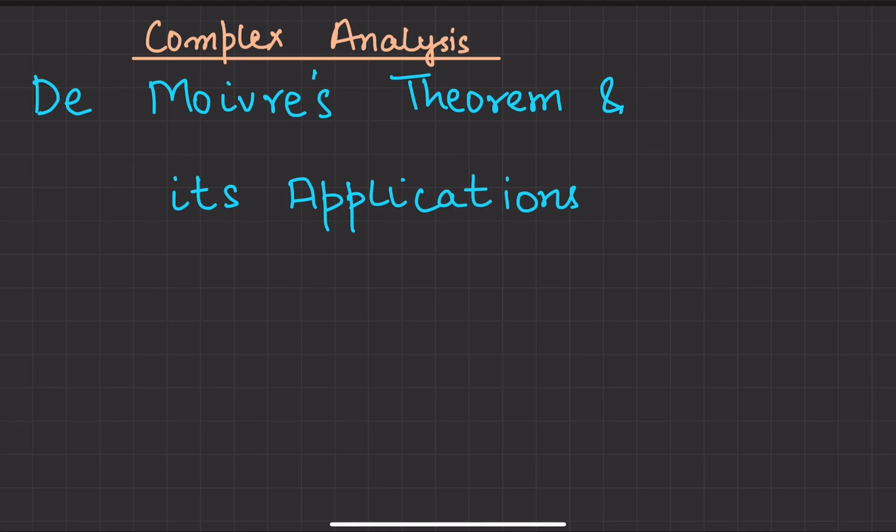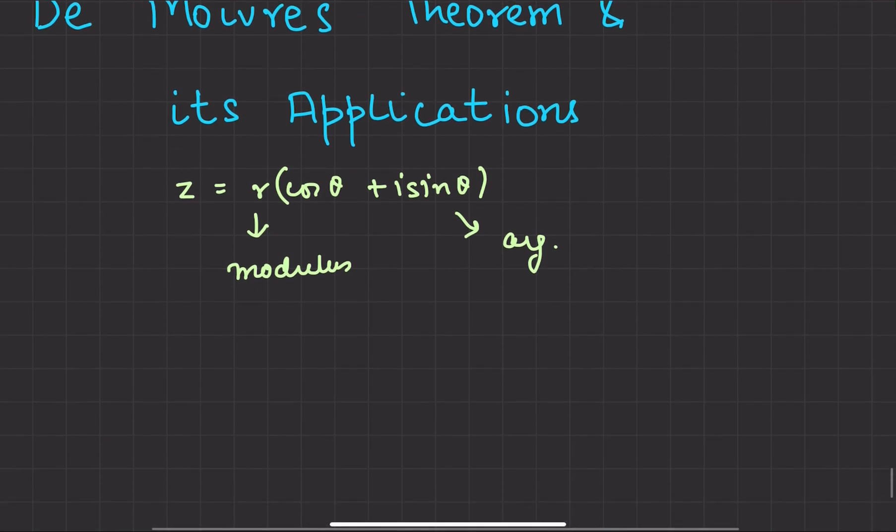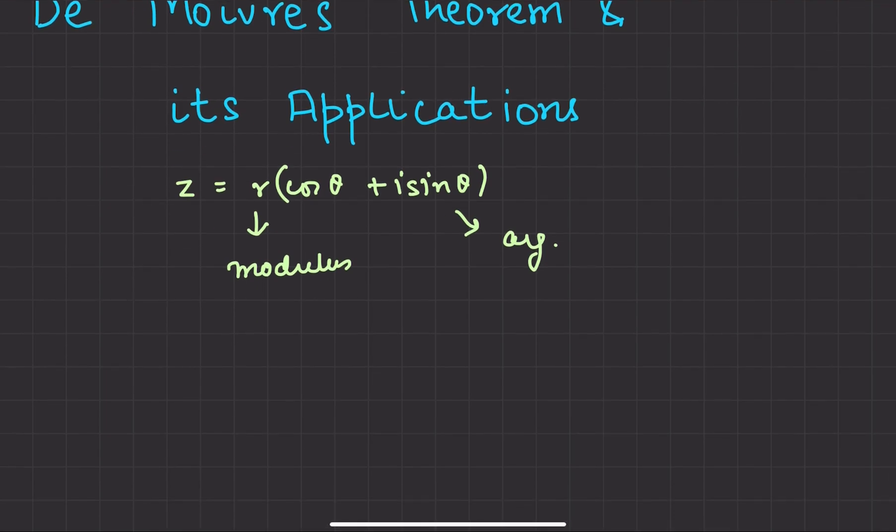First of all, you have to remember that the theorem is always applied where the complex number is in polar form. You can't use it in the Cartesian form. For example, Z is a complex number and it's in polar form: R cos theta plus iota sin theta. What is R here? R is the modulus and theta is the argument. You should know these basics.